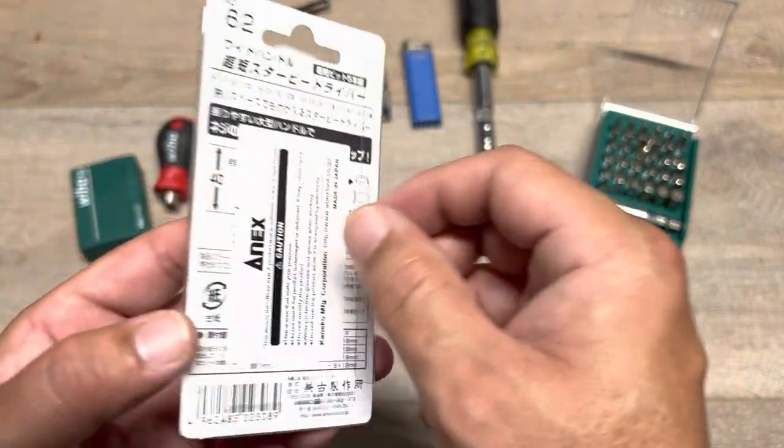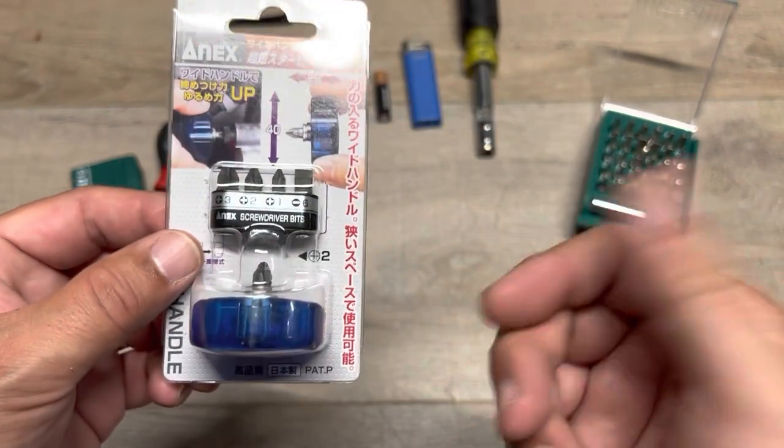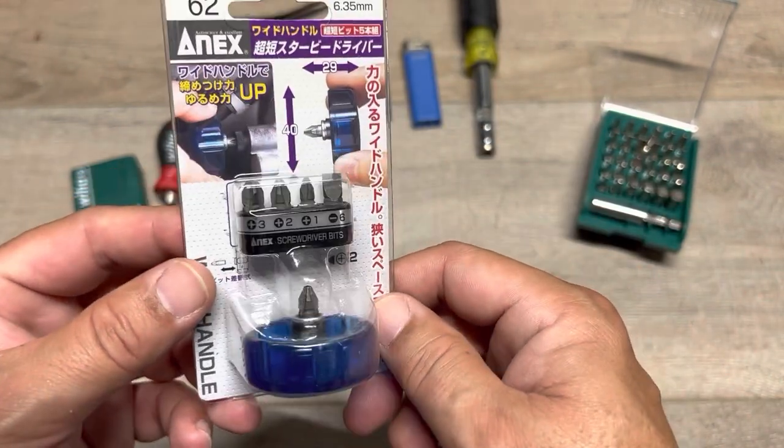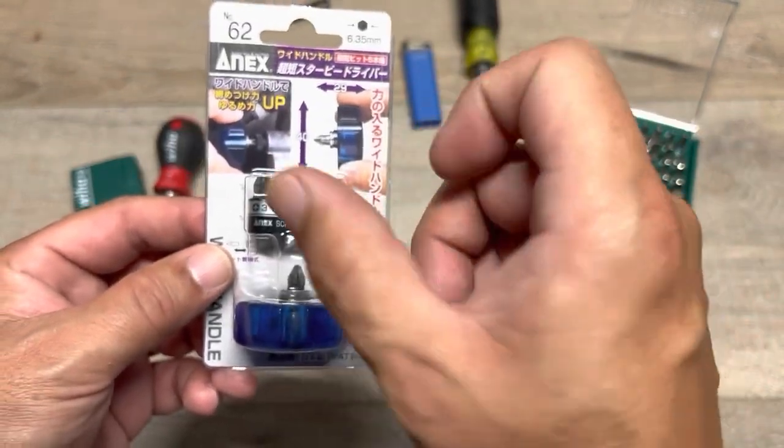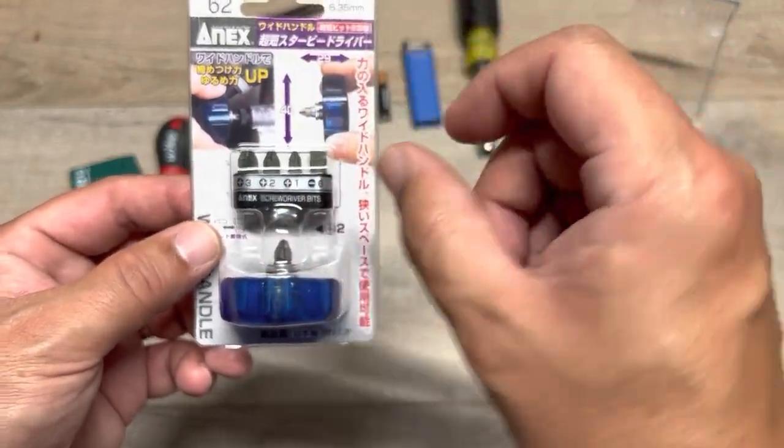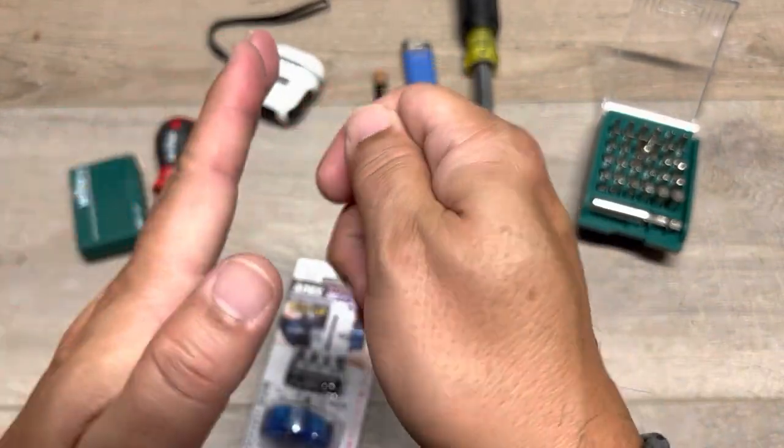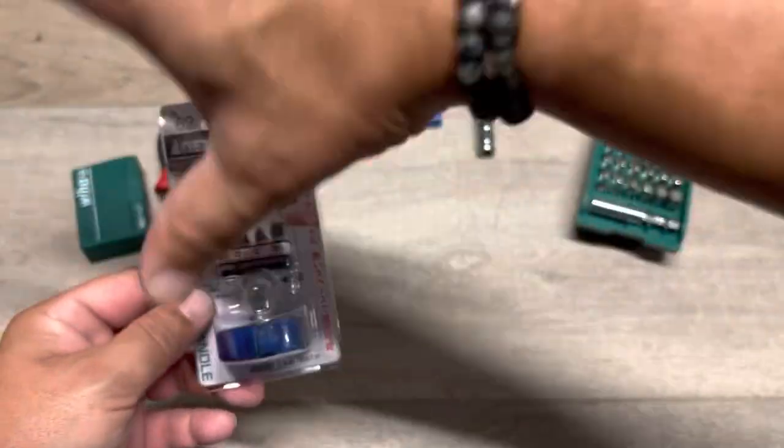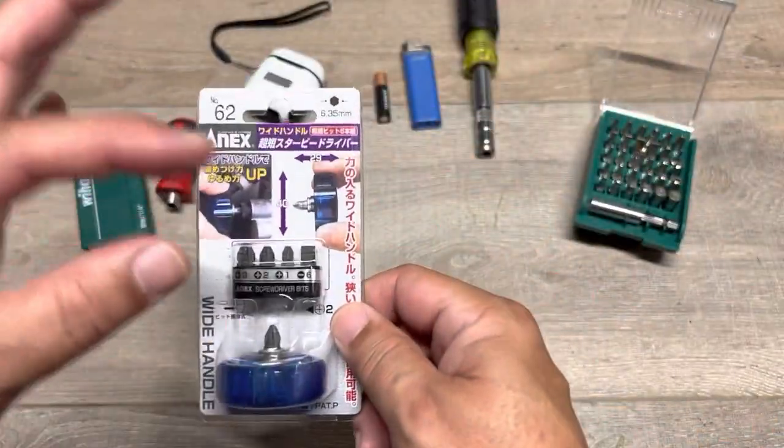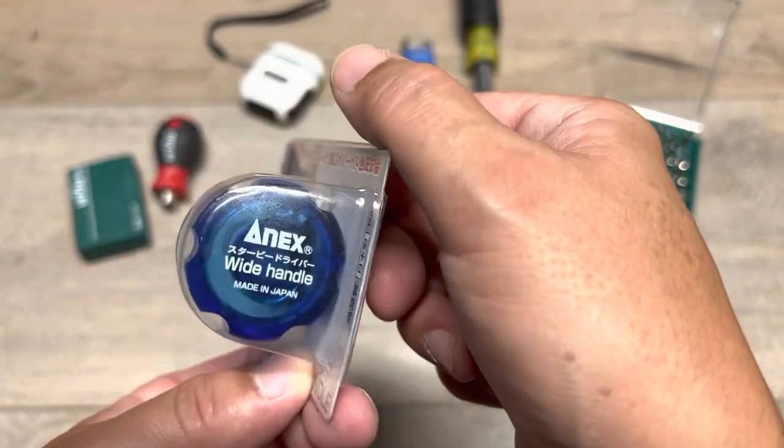From my research, Anex is a company that was started in 1949, and they make quality Japanese tools. Especially for those guys that are into the JDM products, or cars for that matter, your hyped up Toyotas, Hondas, Nissans, they use a lot of these tools because I think this company makes specific tools to get into hard areas.